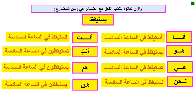هو (he): we don't have to use هو all the time — we may use the shorter form with ياء. So we can say: يستيقظ في الساعة السادسة — He wakes up at six o'clock. هي (she): تستيقظ في الساعة السادسة — She wakes up at six o'clock.